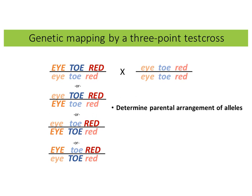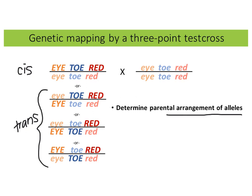Both the arrangement of alleles on the two homologs and the order of genes is arbitrary — we don't know that. It's simply written this way, and we need to analyze the progeny of the three-point test cross to be able to determine that. A three-point test cross allows us to determine three things: we don't know the arrangement of alleles in the heterozygous parent, and by analyzing the progeny we can determine it.